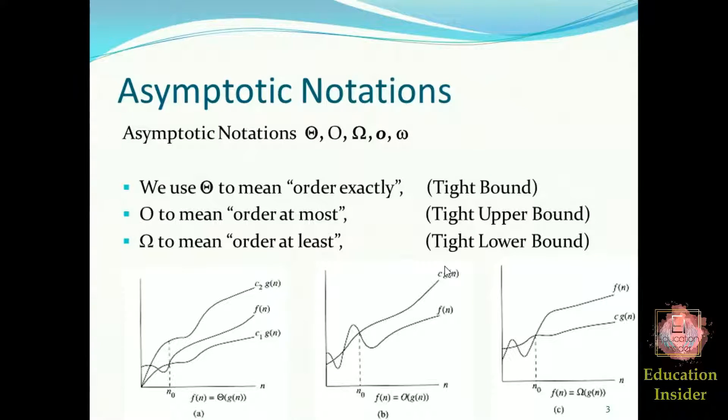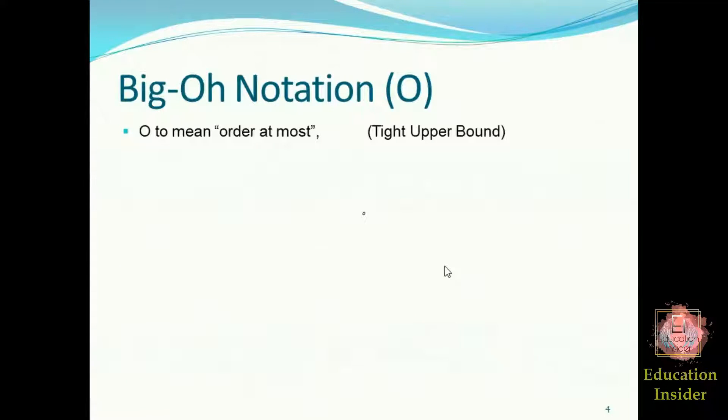I'm not going to bore you with theory. After this slide, we will be taking examples of asymptotic notations. The Big O notation is useful when we only have upper bound on time complexity of an algorithm. This is a tight upper bound.